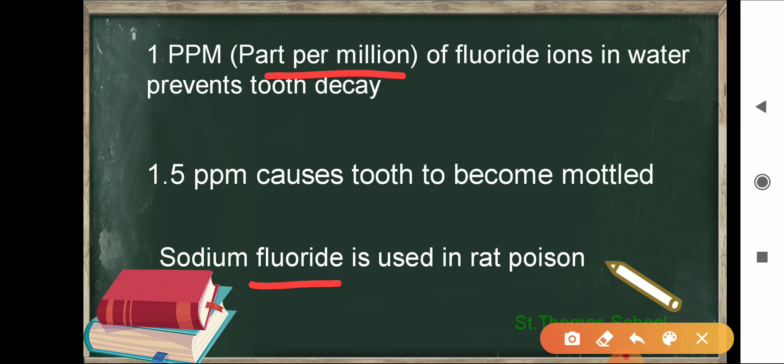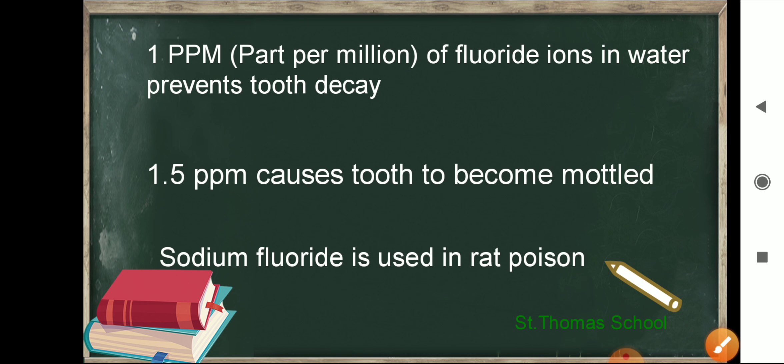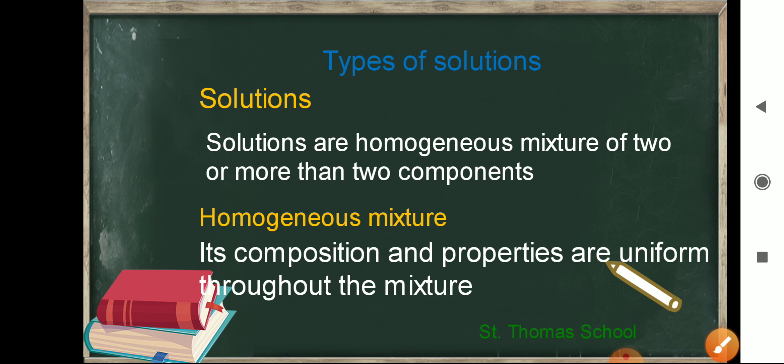In this chapter we are going to consider mostly liquid solutions and their formations — how liquid solutions are formed. We will also follow the properties of solutions, such as vapour pressure and colligative properties. We will begin with types of solutions and the various ways in which concentration of solute can be expressed in liquid solutions.